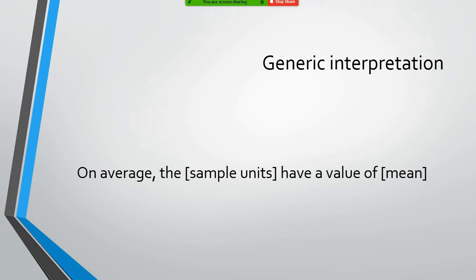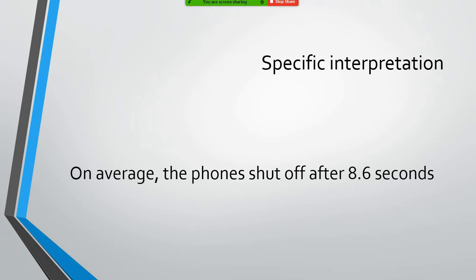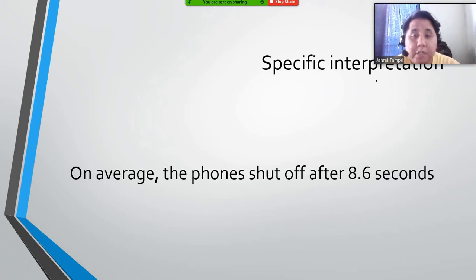To interpret the mean, we have this generic template that we can use: On average, the sample units have a value of whichever the mean is. Applying it on our running example, on average the phones shut off after 8.6 seconds. Looking at this interpretation, it gives us a general idea that even though we do not know exactly what are the power off time of the 25 phones, at least we have an idea that on average it will be 8.6, and the word on average will give us probably more or less time that the values will be at least closer to 8.6.